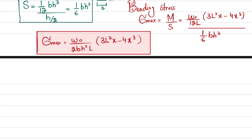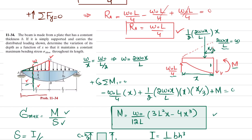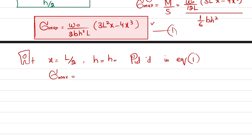From the problem statement, at x = L/2 the height h equals h-naught. Substituting x = L/2 into equation 1 gives the maximum stress at mid-span: σ_max = w-naught·L² / (2b·h-naught²). This is equation 2.